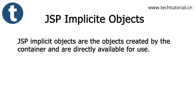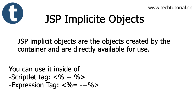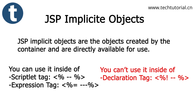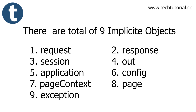JSP implicit objects are created by the container and are directly available for use. These objects are available in the service method, and you can use them using JSP scriptlet tags and expression tags. Remember that you cannot use them inside a JSP declaration tag because it is written at the class level. There are a total of nine implicit objects provided by the container.